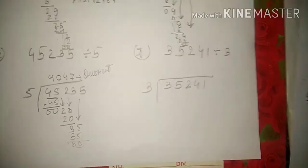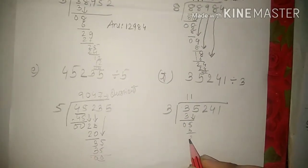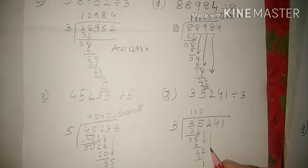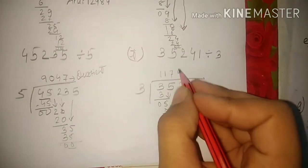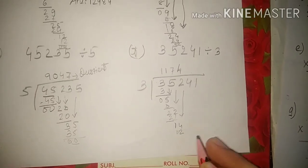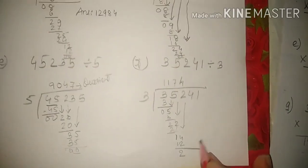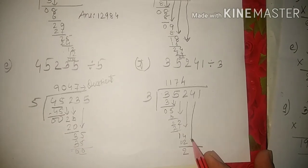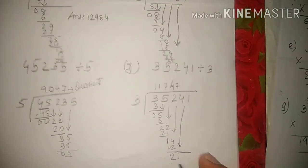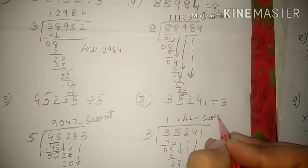Let's do the last sum for today's session. Three ones are three, remainder zero. Five comes down — three ones are three, remainder two. Two comes down — three sevens are twenty-one, remainder one. Four comes down — three fours are twelve, remainder two. One comes down — three sevens are twenty-one, remainder zero. This is your answer, students.